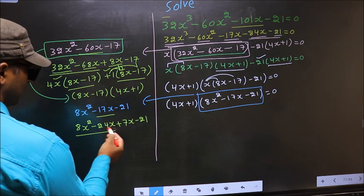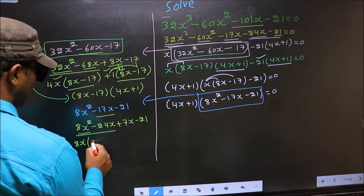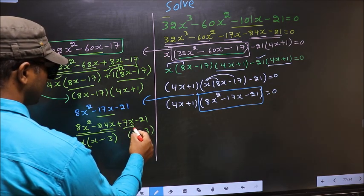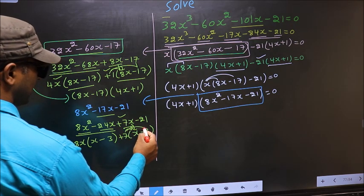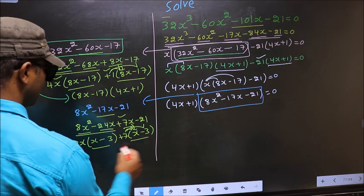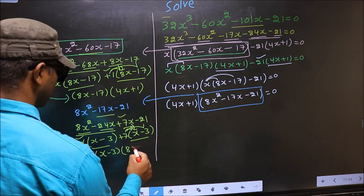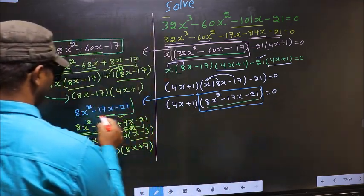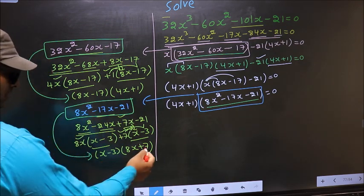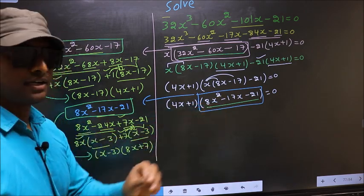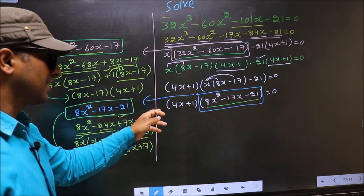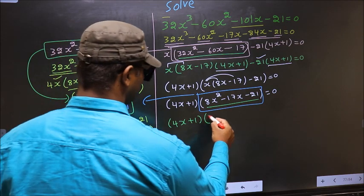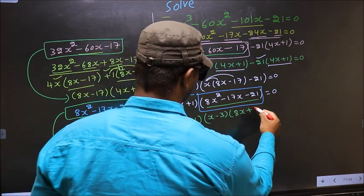What can be taken out common from the first two terms is 8x. So you get 8x times (x minus 3). Whatever you got here, here also you should get the same — plus 7. Now take out (x minus 3) as common, giving (x minus 3)(8x plus 7). Substituting back, the full equation becomes (4x plus 1)(x minus 3)(8x plus 7) equal to 0.